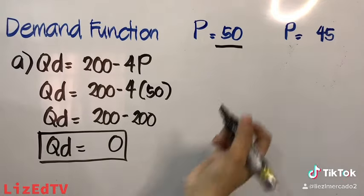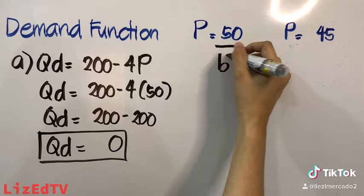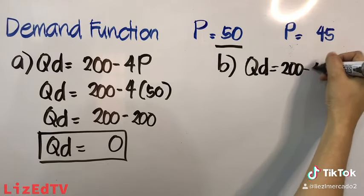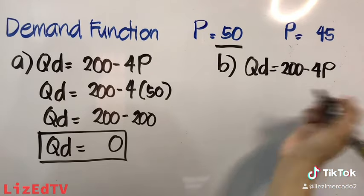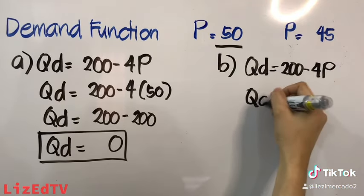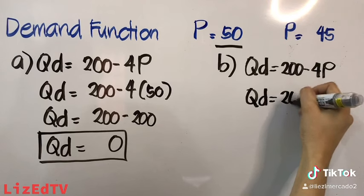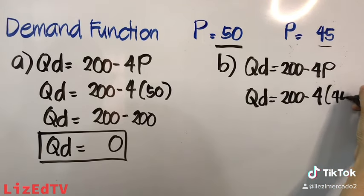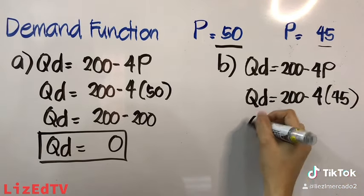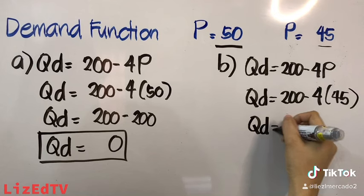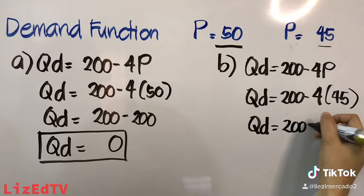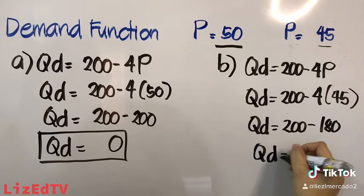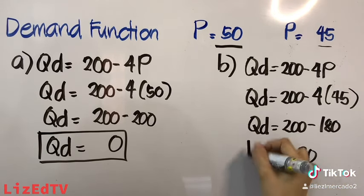Let us use letter B. Example: QD equals 200 minus 4P. Substituting 45: QD equals 200 minus 4 times 45, which is 180. QD equals 20.